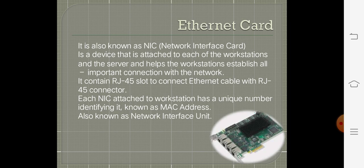Each NIC is attached to the workstation and has a unique number to identify it. This unique identification number is known as the Medium Access Control address — the MAC address — which is the physical address of a computer when connected to a network. The entire unit, that is the Ethernet card with a MAC address and the RJ45 slot, is known as the Network Interface Unit.